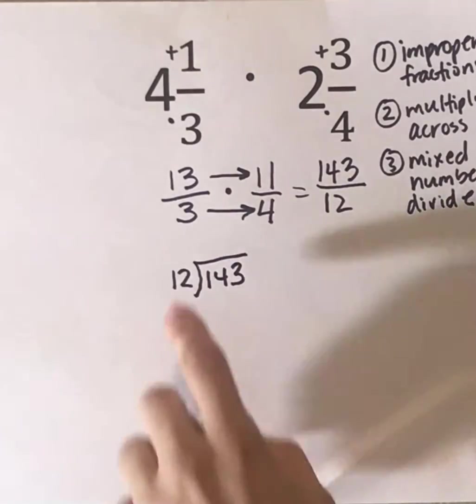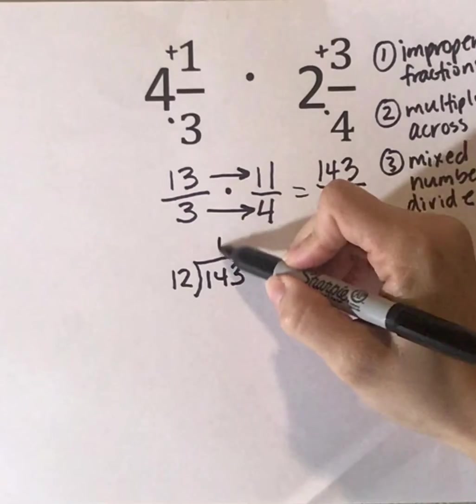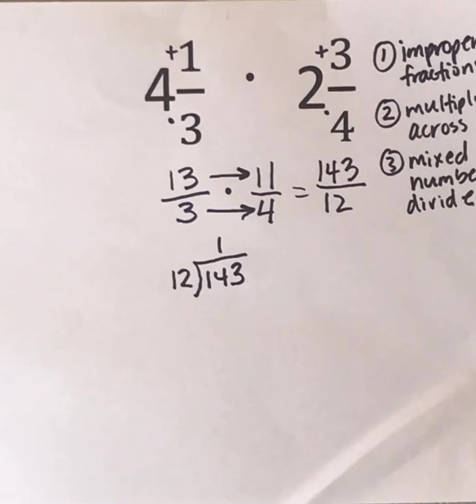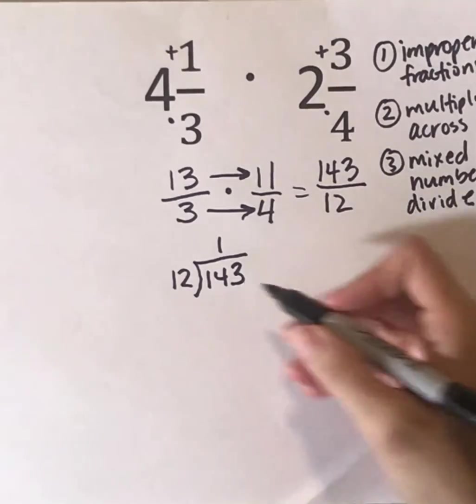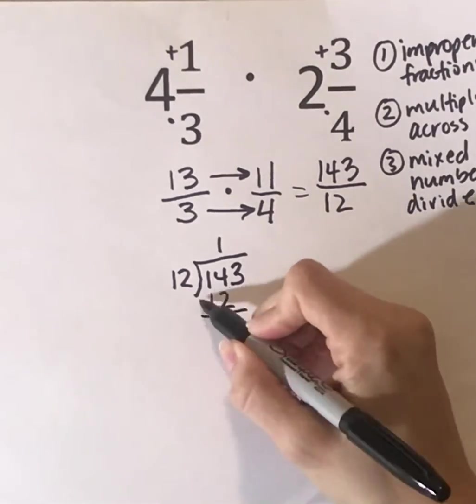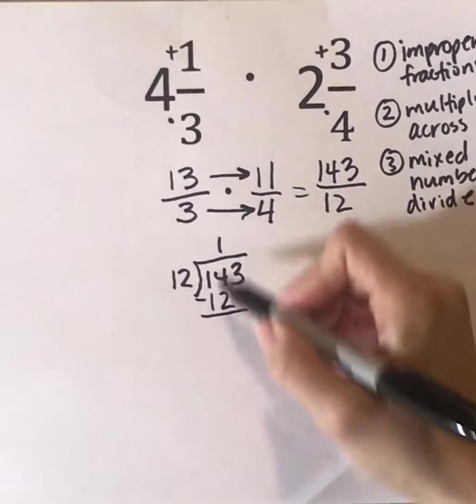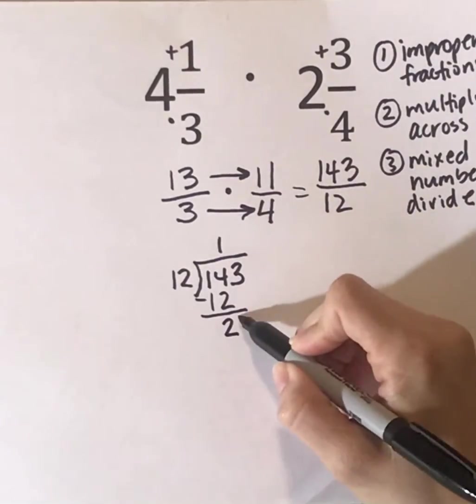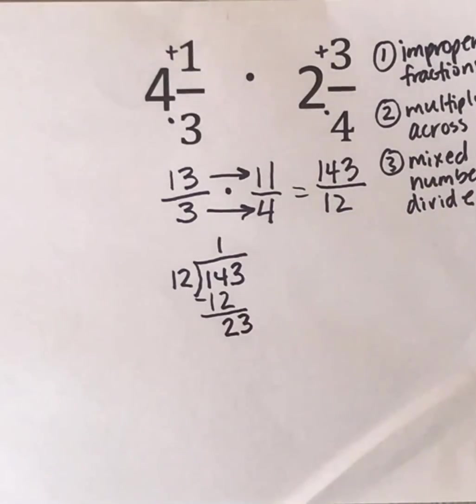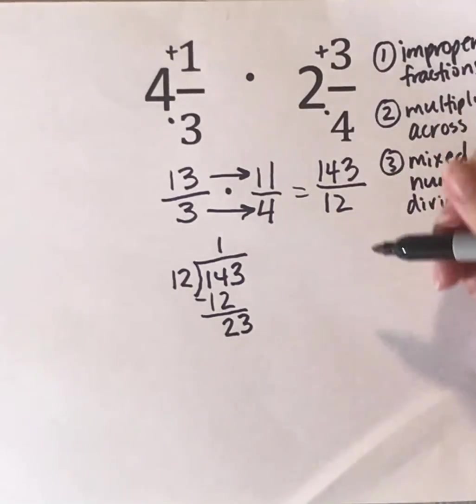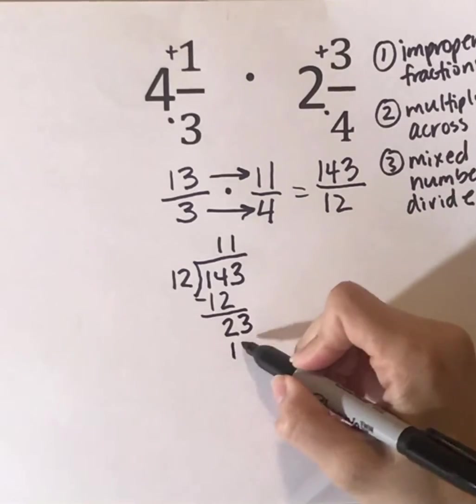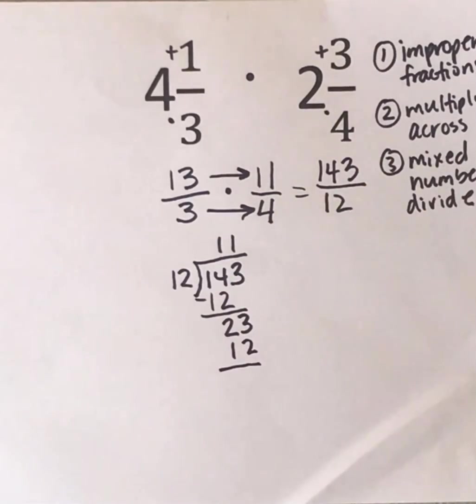So 12 goes into 14 one time. And 12 times 1 is 12. And then we're going to subtract, that's 2, and then bring down. And then we have to figure out how many times 12 goes into 23. And again, it goes in one time. And that becomes 12 because 12 times 1 is 12. And then we're going to do 23 minus 12.